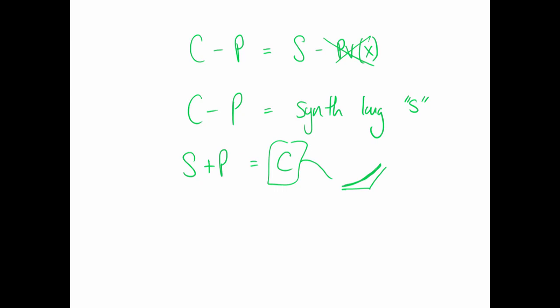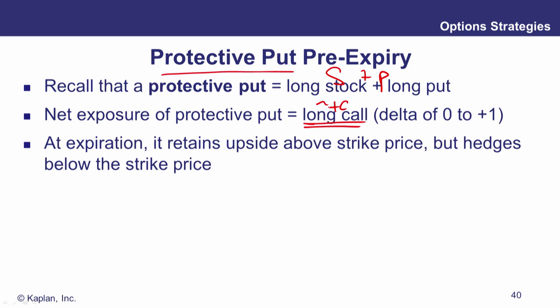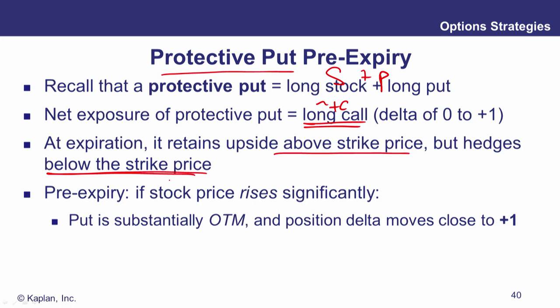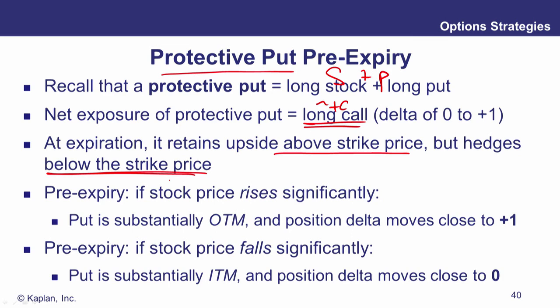The net exposure of the protective put is like a long call — we're retaining upside, but it hedges below the strike, giving capped downside. If the stock rises significantly, the put falls out of the money and we end up with a delta of plus one. Conversely, if the stock price falls significantly, the put goes deeply in the money and cancels out the long plus one delta, leaving us with a delta close to zero.